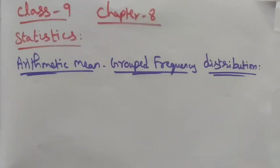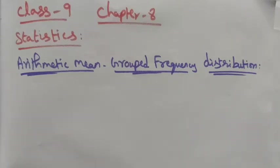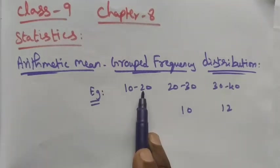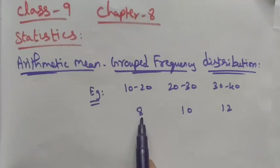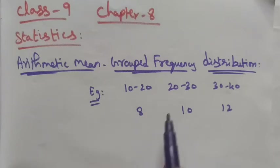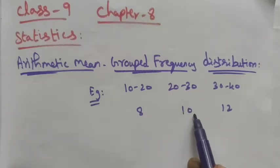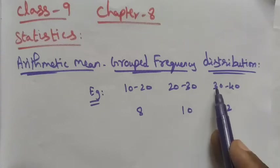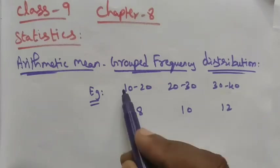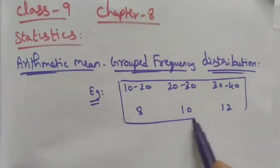Hi students, this is Chapter 8 Statistics: Arithmetic Mean for Grouped Frequency Distribution. For example, 8 students have scored 10 to 20 points in athletics, 10 students scored 20 to 30 points, and 12 students scored 30 to 40 points. This type of data is called a grouped frequency distribution.